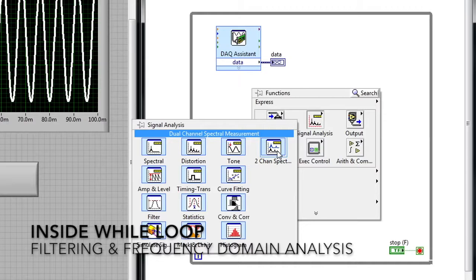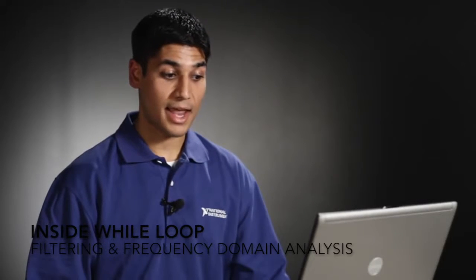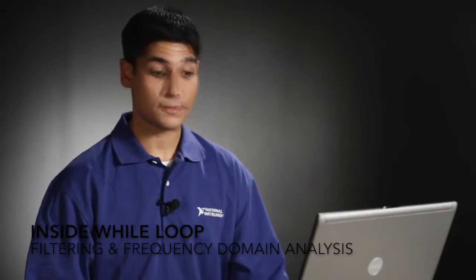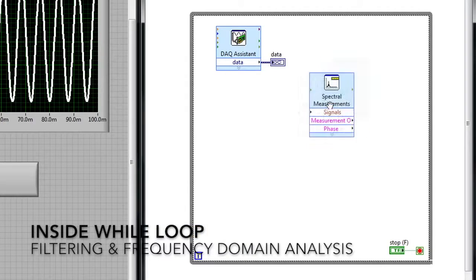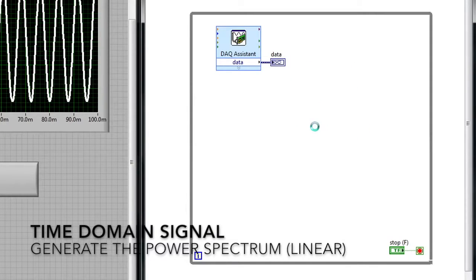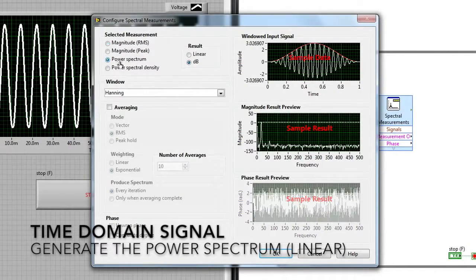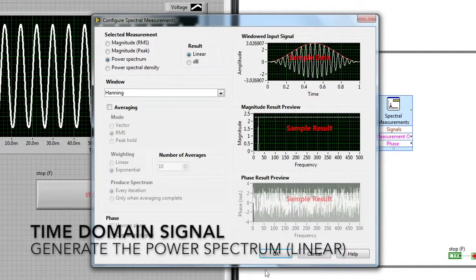In this particular example, we're going to add filtering and frequency domain analysis to my data acquisition application. I'm going to drop down the spectral measurements Express VI. In this Express VI, I can wire a time domain signal and generate the corresponding power spectrum and see what types of frequencies I have within my signal. I'm going to choose power spectrum here and hit OK.